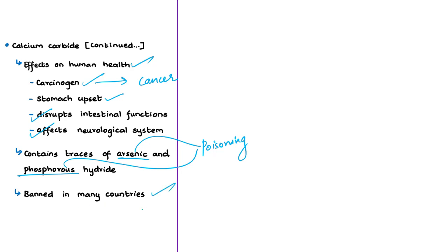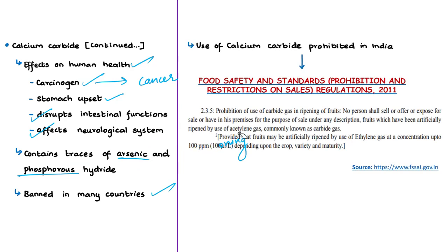Calcium carbide is quite hazardous to human health and is banned in many countries. Under the Food Safety and Standards (Prohibition and Restriction on Sales) Regulations of 2011, the use of calcium carbide for ripening of fruits is prohibited in India. This regulation states that no person shall sell or offer or expose for sale, or have in their premises, fruits which have been artificially ripened by use of acetylene gas — also known as carbide gas, produced when calcium carbide dissolves in water. Persons involved in such prohibited activities will be subjected to penal actions such as imprisonment or fine or both, under the Food Safety and Standards Act of 2006.